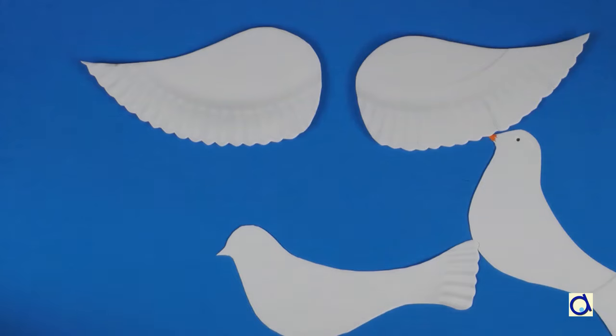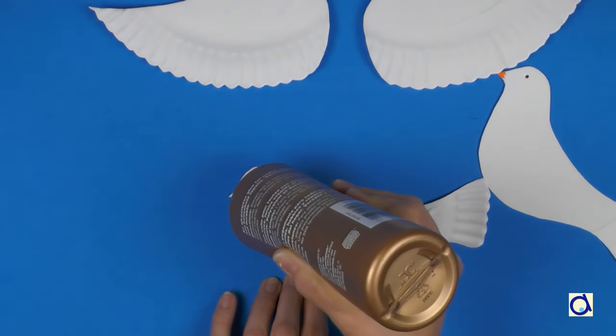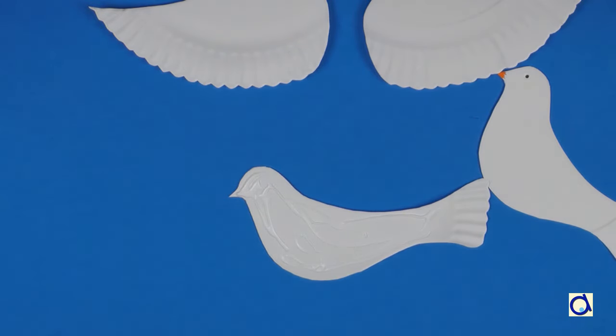Turn one side of the body over and put white glue everywhere except on the tail. If you wish, you can even glue a twig with leaves to symbolize an olive branch between the two layers of the beak.